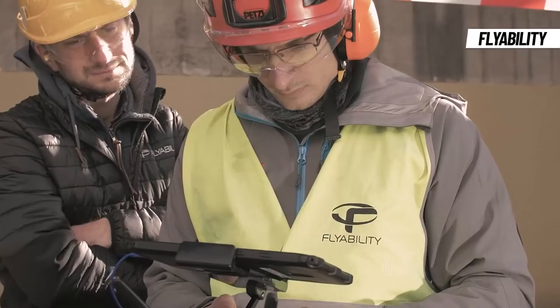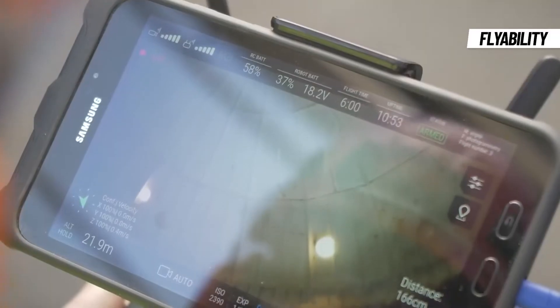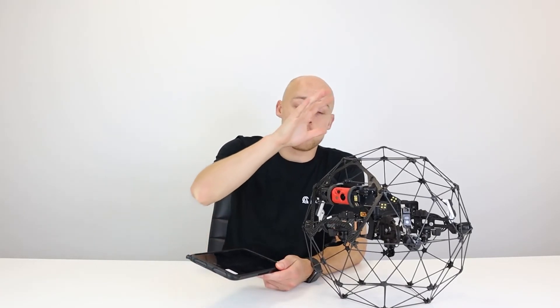Finally we've got the tablet that the Flyability Elios 2 works on. It's a Samsung tablet. When you receive it from ourselves you'll get the training along with the flight coaching. This will all be pre-loaded and updates will be regularly available. They are free and included with all of the Elios 2 sales that we do. You have Pilot which controls the drone, and then you also have Inspector which is the post processing software which you can find on the Flyability website or on our website copters.com.